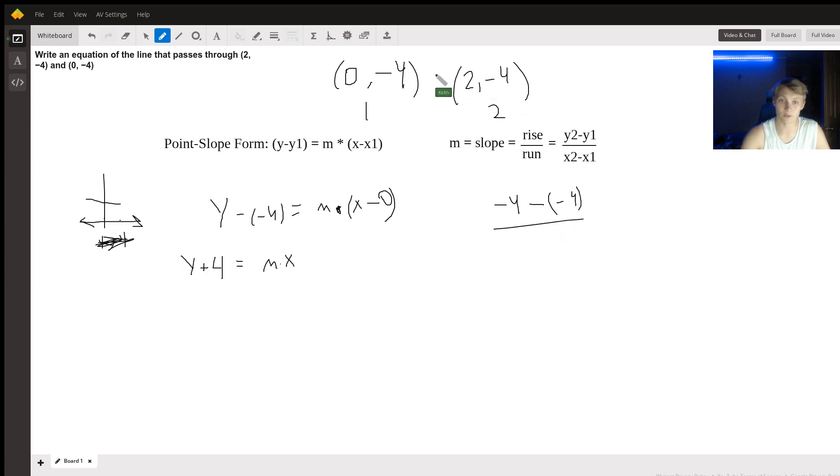So let's just plug them in. Negative 4 minus negative 4 on the top, that's y2 minus y1, divided by 2 minus 0. And again, negative 4 minus negative 4 is going to equal 0 over 2. And remember, we're allowed to do 0 over something, just not the other way around. So this means that m is equal to 0.